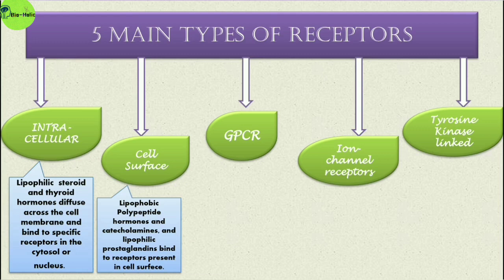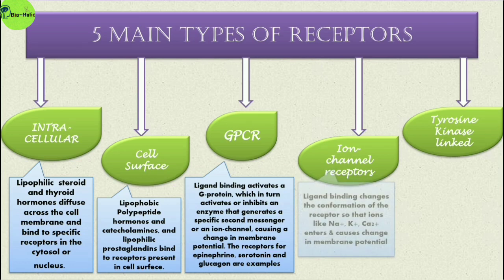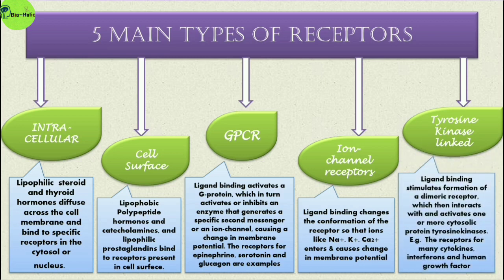G protein coupled receptors or GPCR: ligand binding activates a G protein, which in turn activates or inhibits an enzyme that generates a specific second messenger, or an ion channel, causing a change in membrane potential. Examples include receptors for epinephrine, serotonin, and glucagon. Ion channel receptors: ligand binding changes the conformation of the receptor so that ions like sodium, potassium, and calcium enter and cause changes in membrane potential. Tyrosine kinase linked receptors: ligand binding causes formation of a dimer which activates one or more cytosolic protein tyrosine kinases — examples include receptors for many cytokines, interferons, and human growth factors.